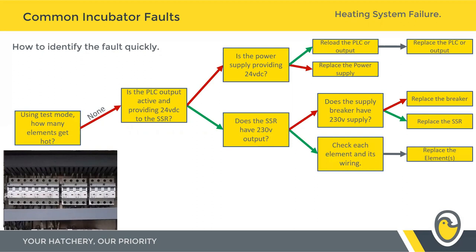If your solid state relay does have output — it's putting out a clean 230 or 110 volts — but your heating elements aren't getting hot, check each heating element and its wiring. The heating elements on an individual zone are all wired in parallel, so it's exceedingly unlikely that one going down will impact the rest. However, if you've got a short on the system, you can find the breaker repeatedly tripping. At this stage of fault-finding, it's worth swapping out individual heating elements to rule them out one by one.